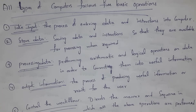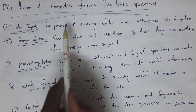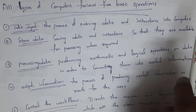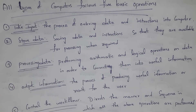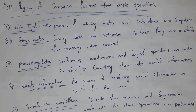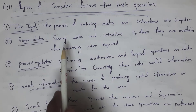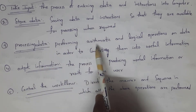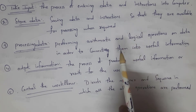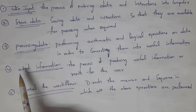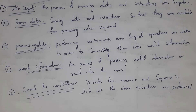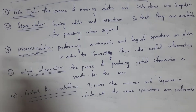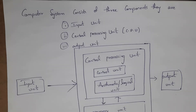Every computer follows five basic operations. First is input — entering data and instructions into the computer via input devices like a keyboard. Second is storing data — whatever data is entered is stored in RAM or hard disk for later access. Third is processing data — performing arithmetic and logical operations to convert data into useful information. Fourth is output — producing useful results via output devices like a monitor. Fifth is control — all operations must be done in sequence, handled by the computer.